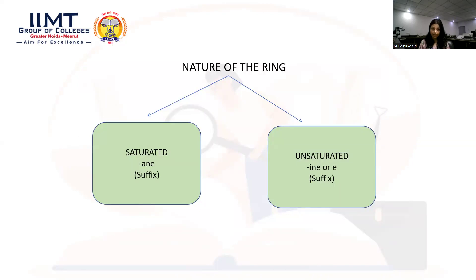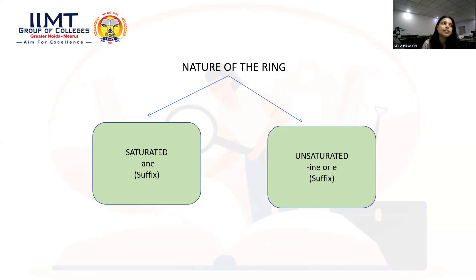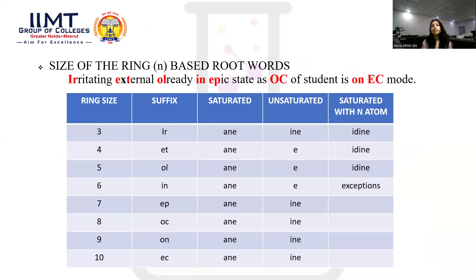The second classification is based on the nature of the ring — saturated or unsaturated. For a saturated ring, the suffix used is '-ane.' For unsaturated compounds, the suffix used is '-ine' or '-ene.' The rule is that saturated and unsaturated suffixes apply only to completely saturated or completely unsaturated rings respectively. If a ring is partially saturated, these suffixes cannot be applied.